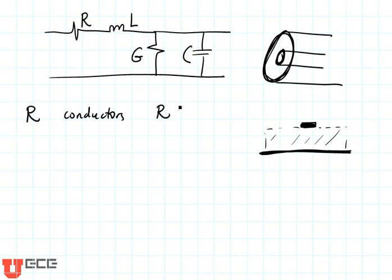We model R as something that we call R prime times delta Z. R prime is going to be given in ohms per meter, and that is the resistance of this transmission line per meter.